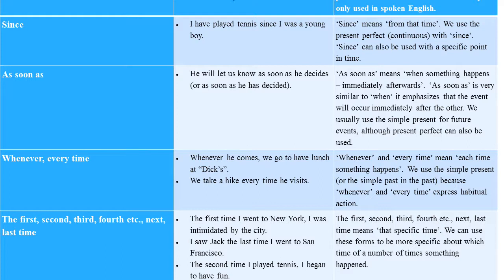The first, second, third, fourth, next, last time: 'The first time I went to New York, I was intimidated by that city.' 'I saw Jack the last time I went to San Francisco.' 'The second time I played tennis, I began to have fun.' These forms mean 'that specific time,' and we can use them to be more specific about which time or number of times something happened.